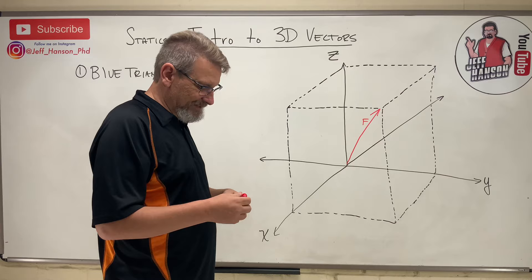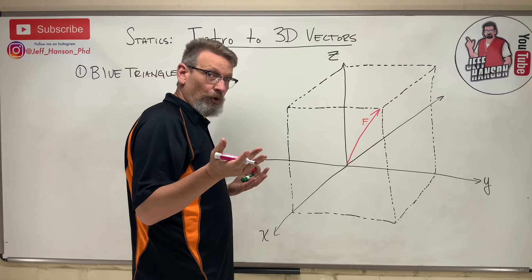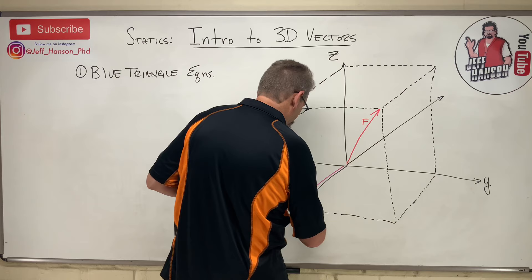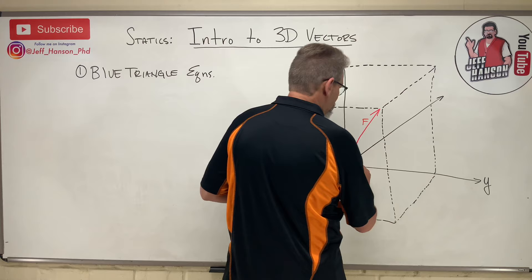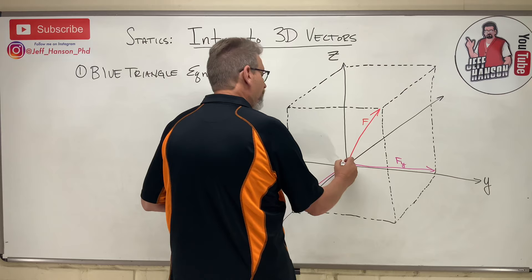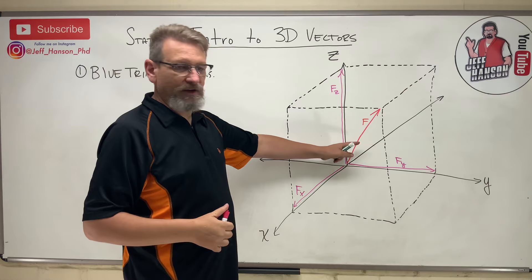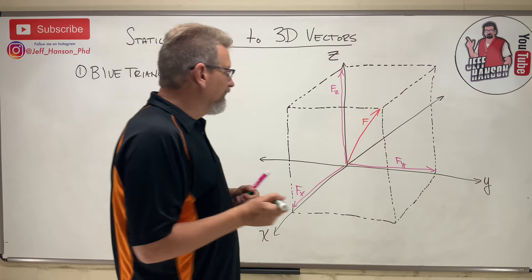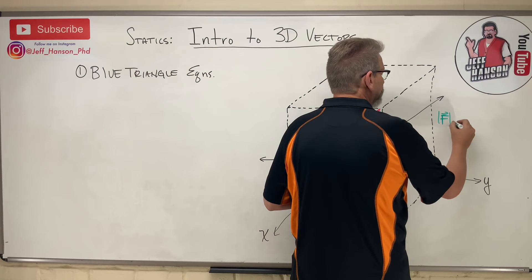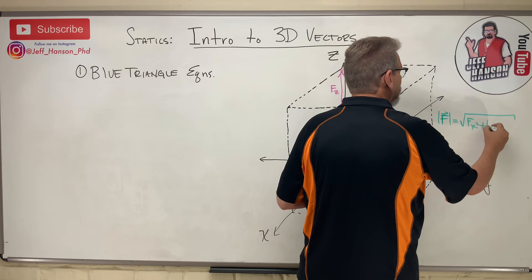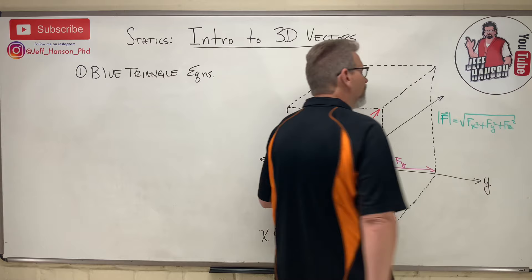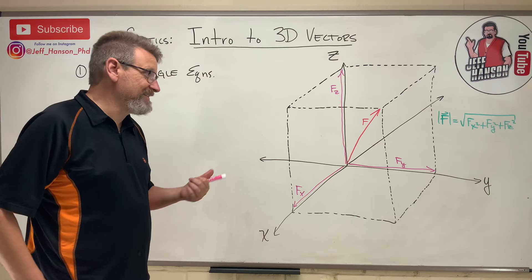A 3D vector, just like a 2D vector, has projections onto the axes. So vector F would have three components instead of two. In 3D it has Fx, Fy, and Fz. The same as in 2D, if I want to know the magnitude of vector F, it's the square root of Fx squared plus Fy squared plus Fz squared. So finding magnitude in 3D is the exact same way we do it in 2D.